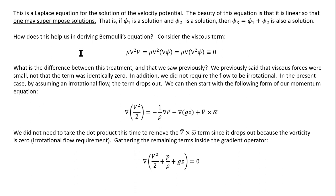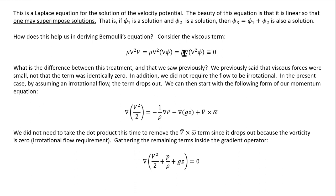The beauty of Laplace's equation is that it's linear, so solutions can be superimposed: if phi one and phi two are solutions, then phi one plus phi two is also a solution. Regarding the viscous term, mu del squared v equals mu del squared of grad phi. For irrotational flow we can interchange the del squared and grad operators, and since del squared phi equals zero, the viscous term mu del squared v equals zero identically.